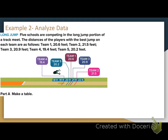Part A wants me to make a table for this situation. What might be my two sets of data points? The teams — team numbers 1, 2, 3, 4, 5 — will be my top row. What would be my bottom row? The distances.